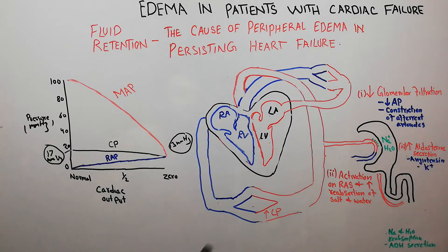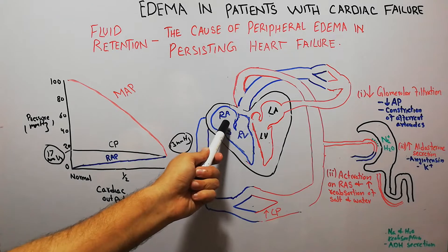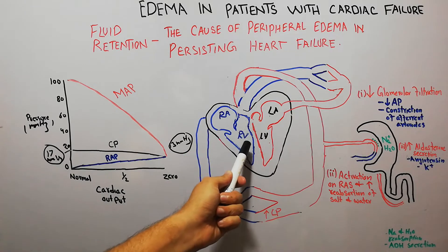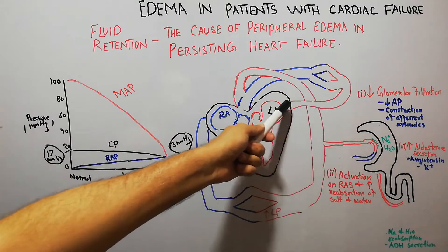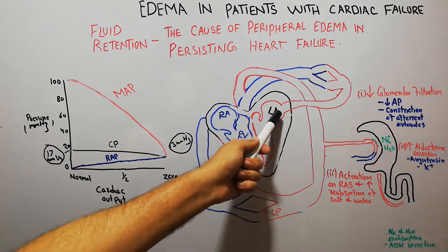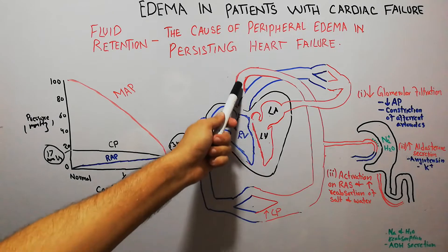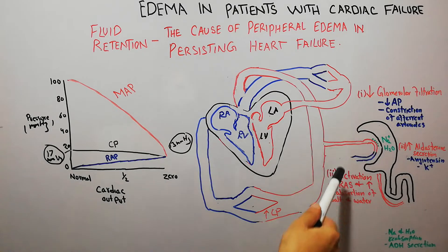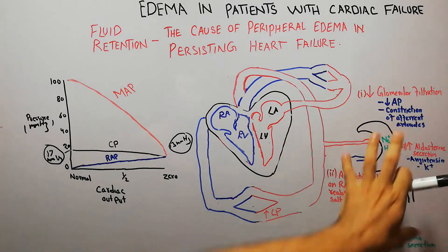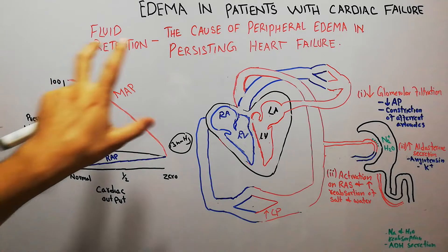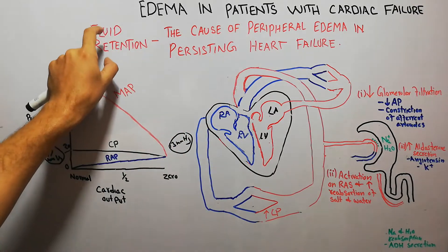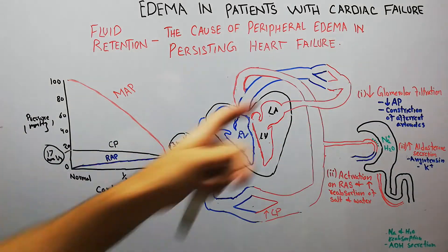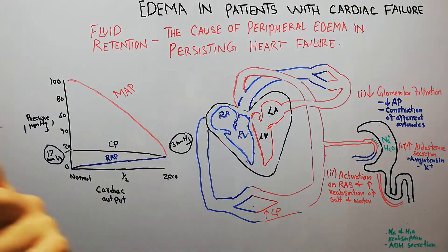Blood comes into the heart into the right atrium; from the right atrium blood goes into the right ventricle; from the right ventricle blood goes into the lungs where it gets oxygenated; then oxygenated blood comes into the left atrium; from the left atrium blood goes into the left ventricle; and from the left ventricle the blood goes into the human body, supplying all organs and tissues. We have drawn just one organ — the kidney — with a glomerulus and tubules at the micro level, to explain the cause of fluid retention and peripheral edema in chronic cardiac failure.